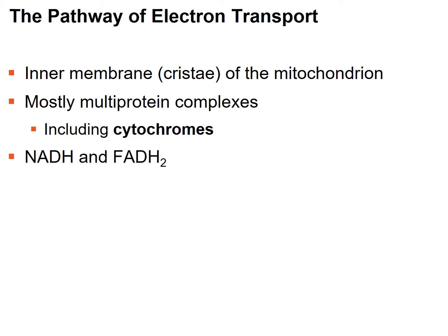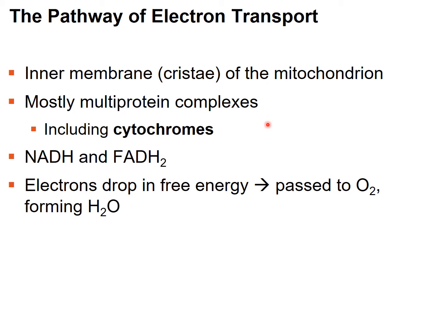NADH and FADH2 come from several processes: glycolysis, the citric acid cycle, and pyruvate oxidation. These are the electron carriers — they're carrying electrons and going to drop them off at the multi-protein complexes within the electron transport chain. The electrons start out at a higher free energy and, as they're passed through the multi-protein complexes, they drop in free energy.